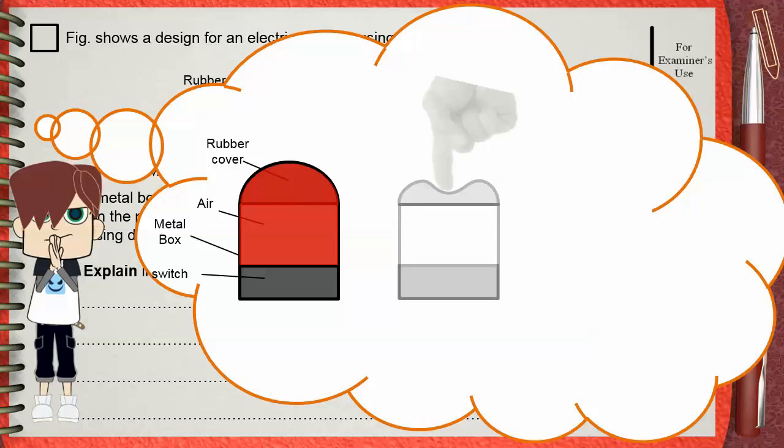When the rubber cover is pushed, the volume of air decreases. When the volume of air decreases, this causes the air molecules to hit the inner surfaces more frequently. And this also happens to the top surface of the switch.